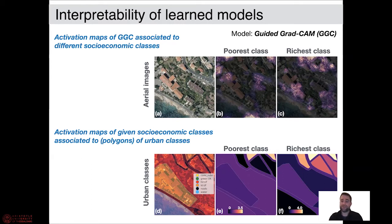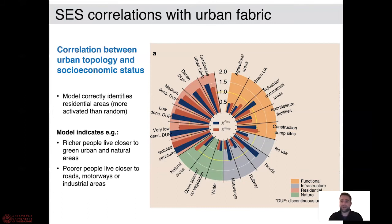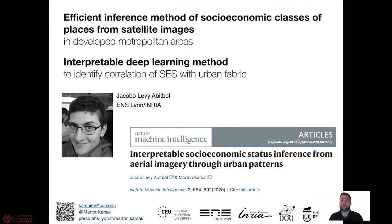Using this trained model to infer socioeconomic classes, we wanted to map its activations back to the original images to see which visual information it was using to predict the given classes. So we could identify which building or urban pattern characterizes poor or rich class predictions. Using the guided Grad-CAM model, borrowed from neural imaging, we correlated these activations with the underlying urban polygons from the urban atlas dataset. We found that our model identifies residential areas very well. We also found intuitive patterns like richer people living closer to natural or green urban areas, and poor people living closer to industrial areas, roads, or motorways.